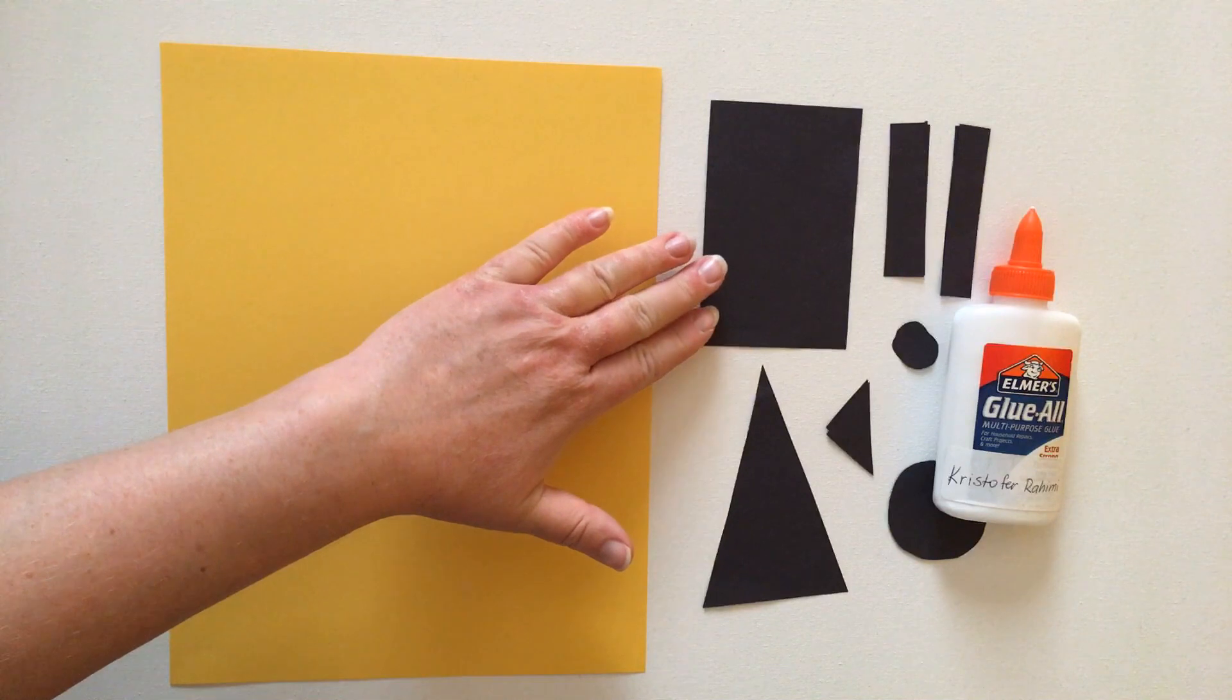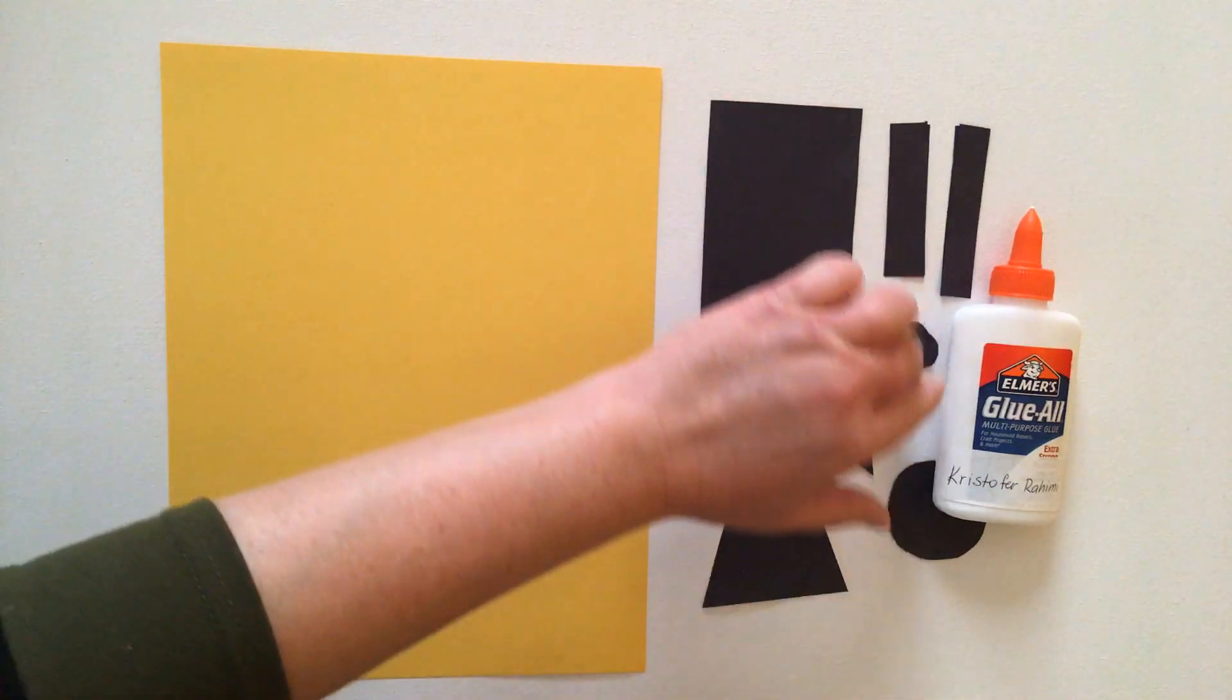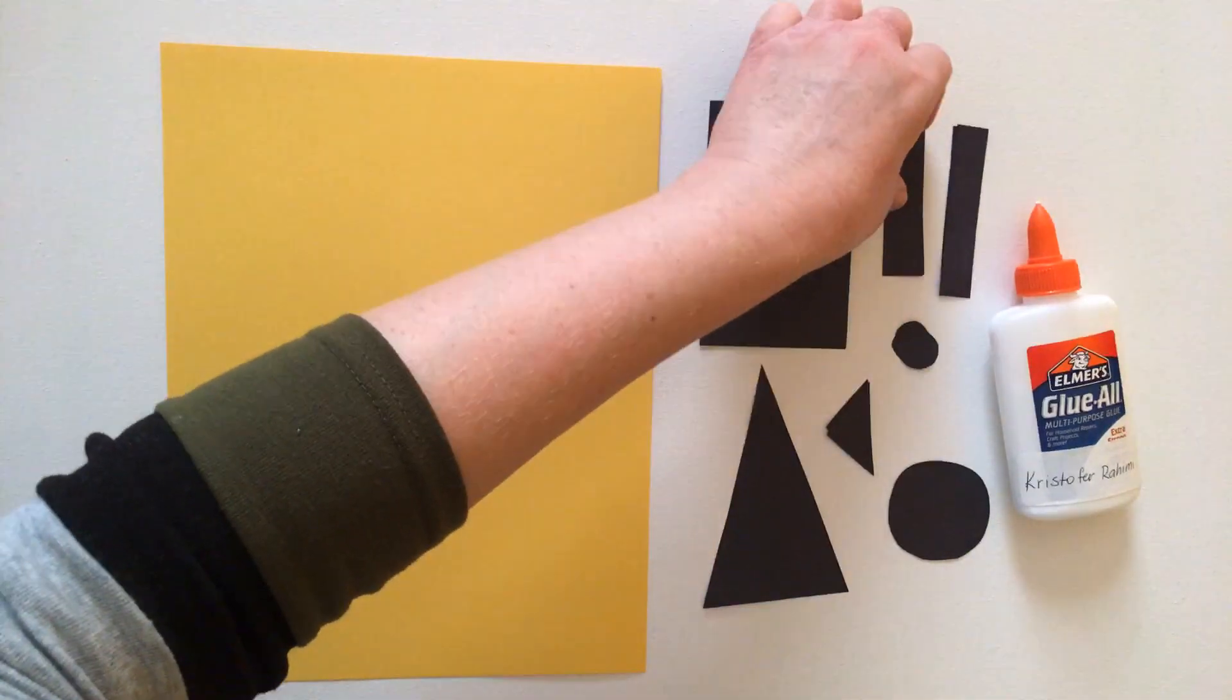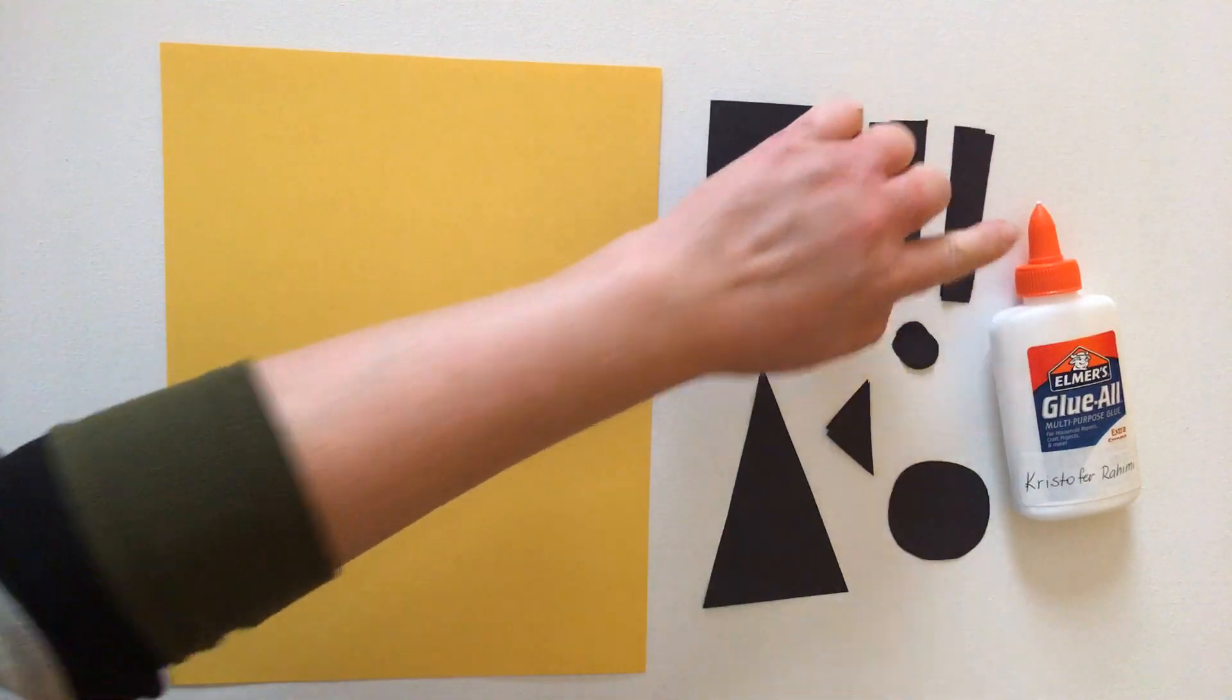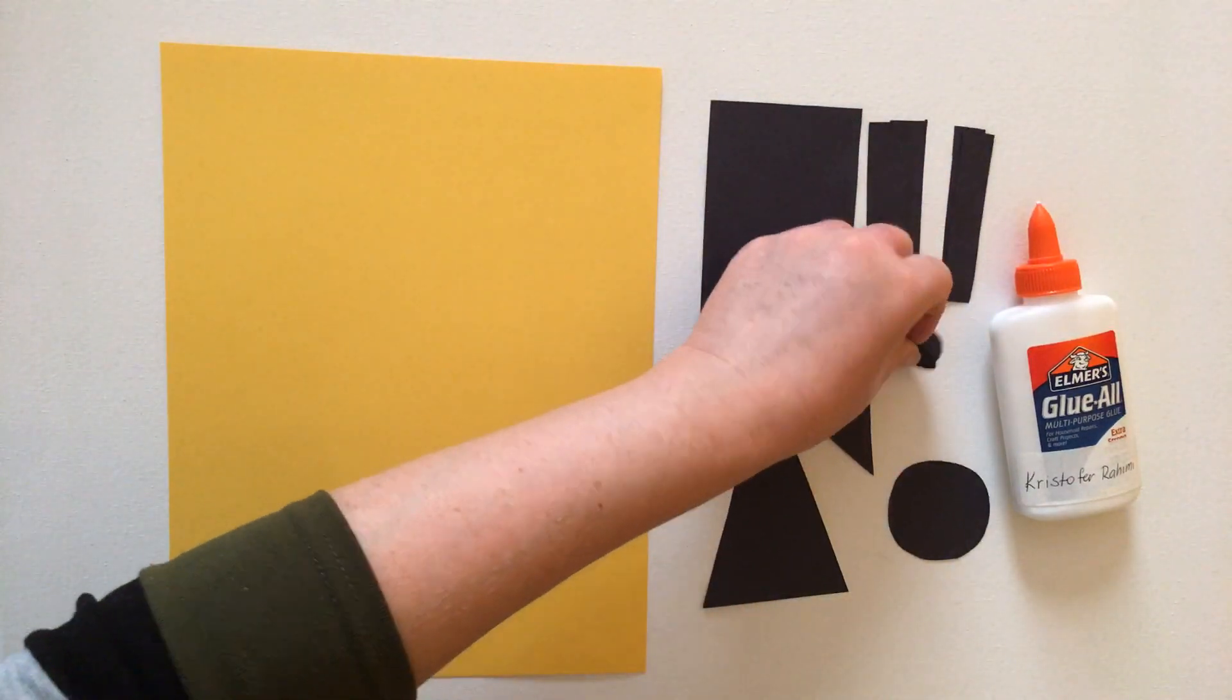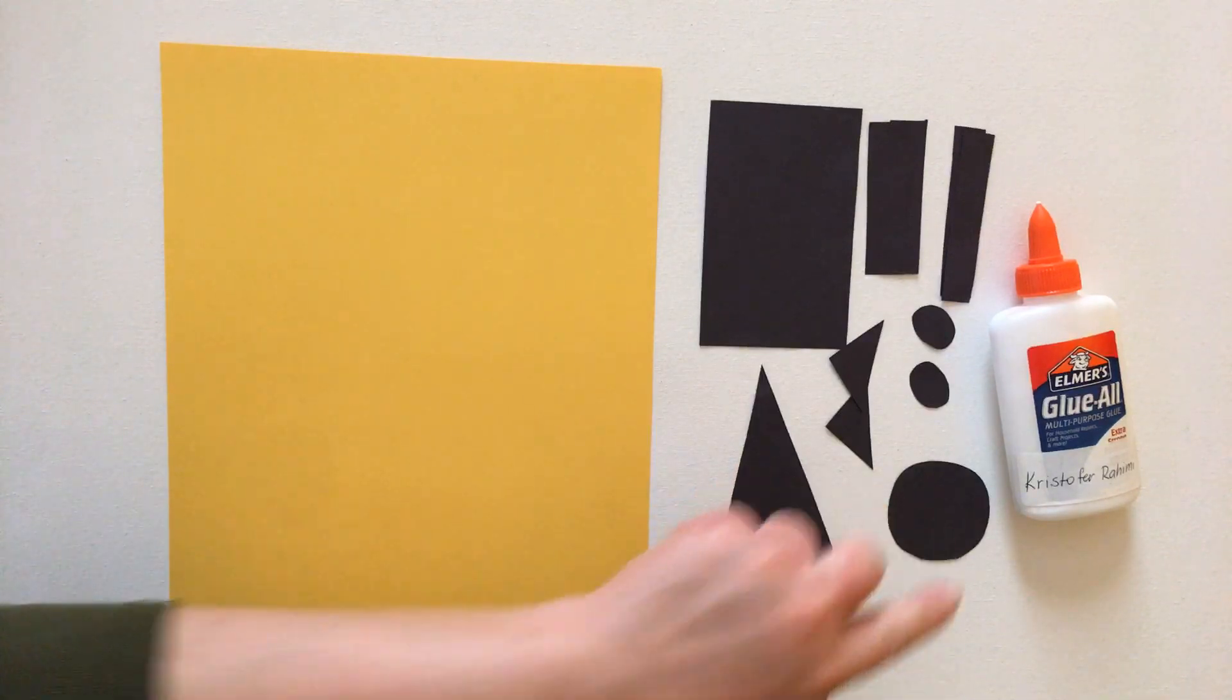Everybody should have a rectangle and either a triangle or an oval, then two shorter rectangles, two longer rectangles, two little ovals, two little triangles, and one circle.